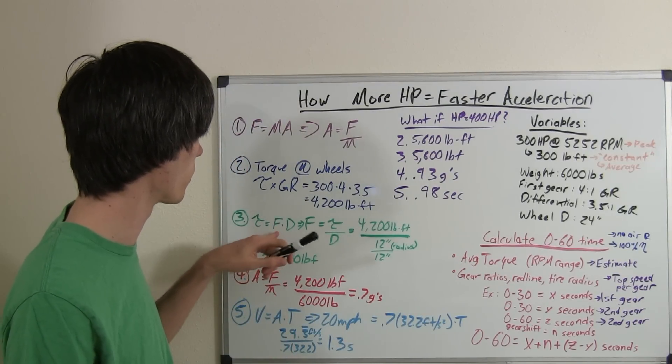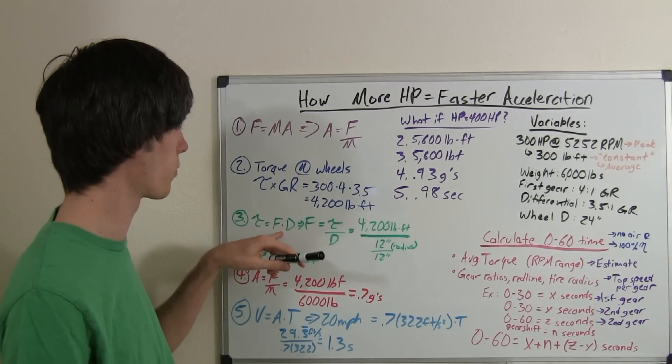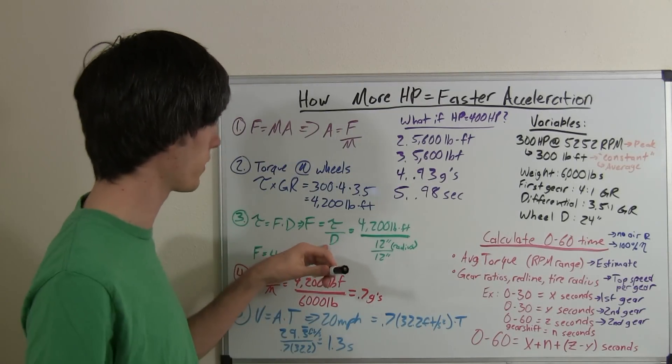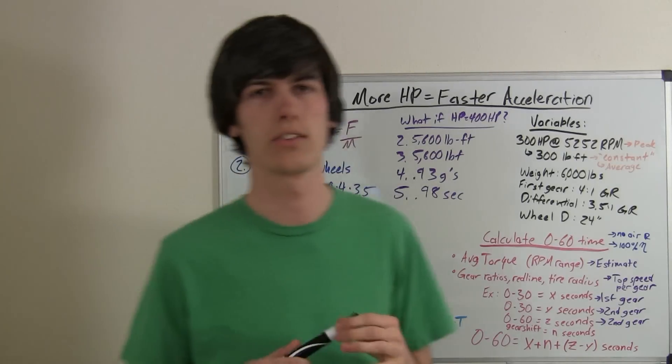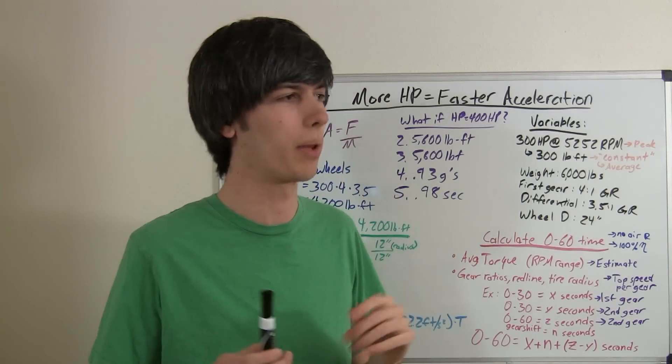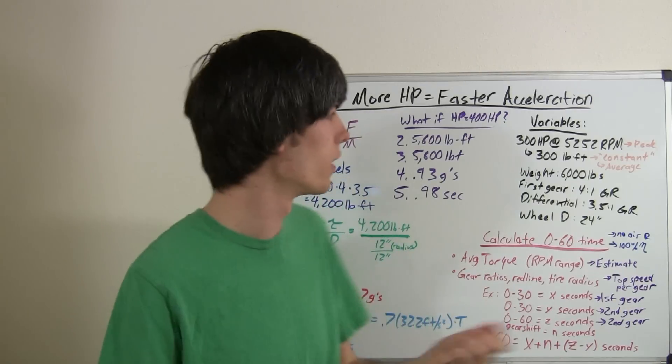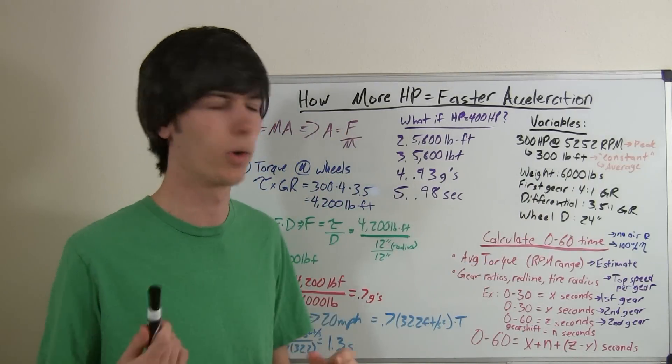Now, what we want to do is find the force, this F right here. So, we know that torque is equal to force times distance. So, force is equal to torque divided by the distance. We know our torque from the previous step. And the distance is the distance in which that torque is applied. So, it's going to be from the center of the wheel to touching the road. So, since we have a 24 inch diameter wheel, that will be the radius of that, 12 inches.